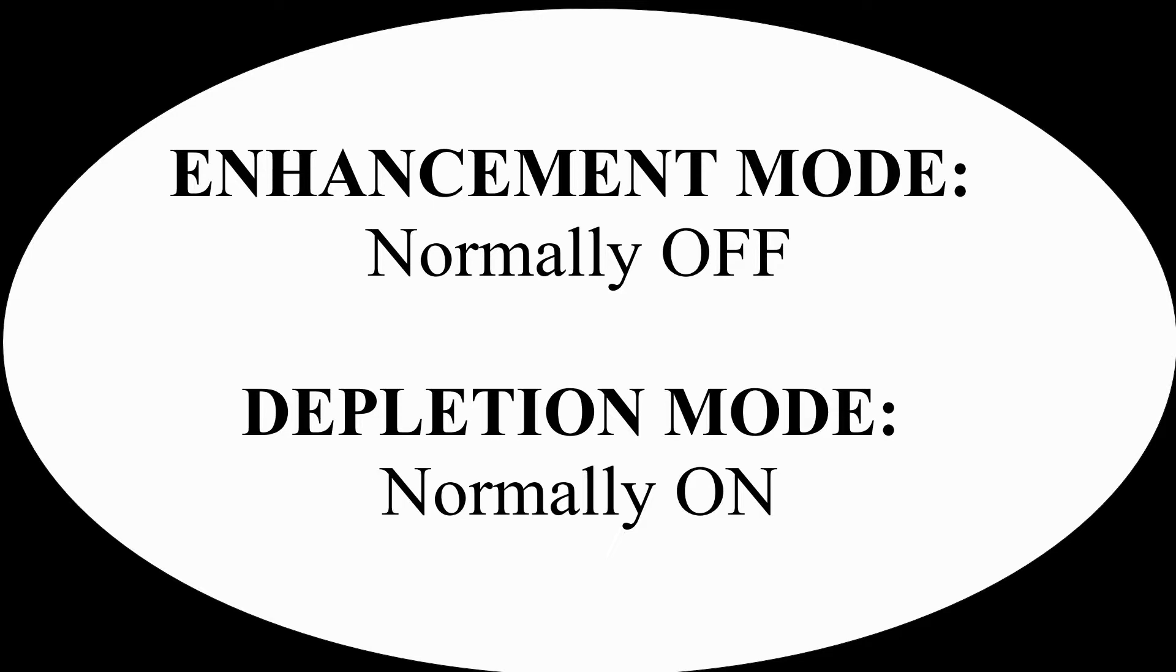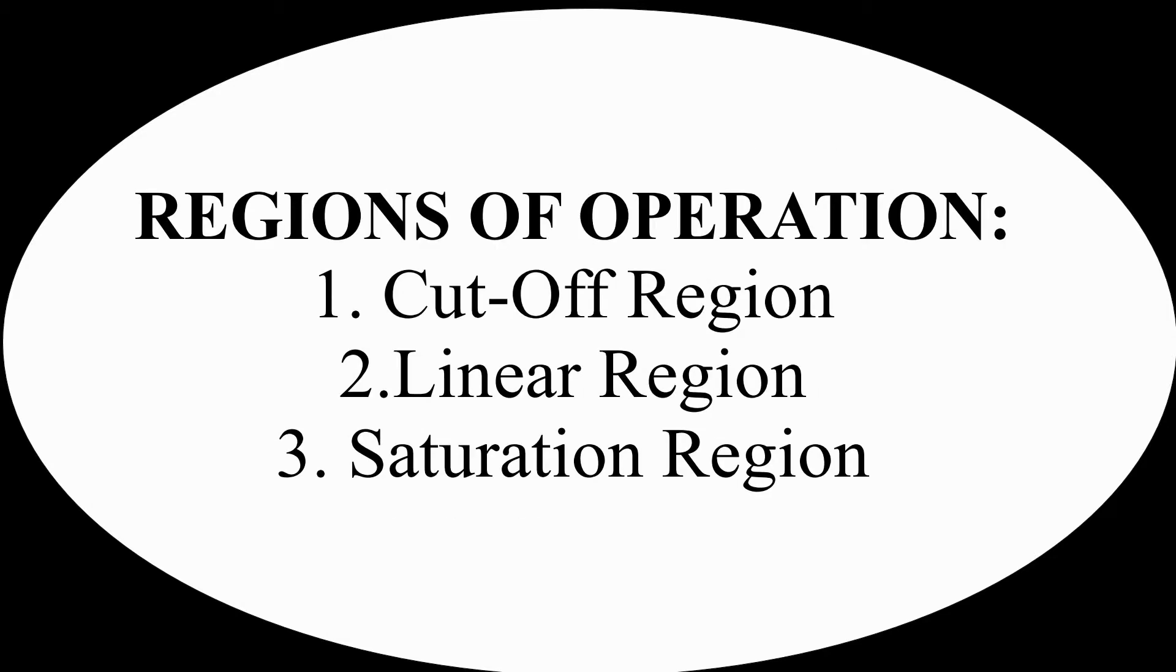The enhancement mode is what may be termed as normally off—that is, when the VGS gate-source voltage is zero, a gate voltage is required to turn it on. Whereas the other form, depletion mode devices, are normally on when VGS is zero. Let's learn about the regions in which MOSFETs are operated.